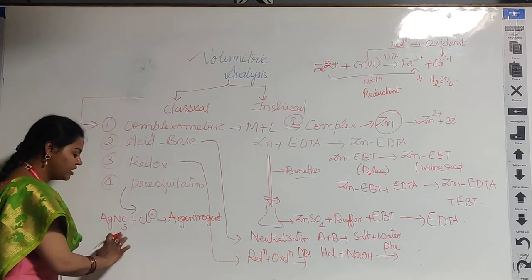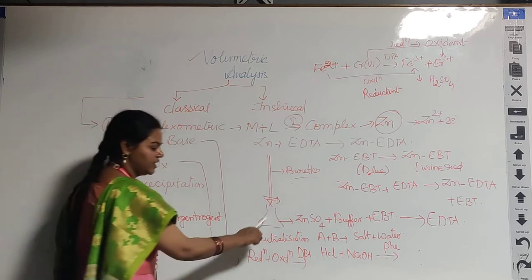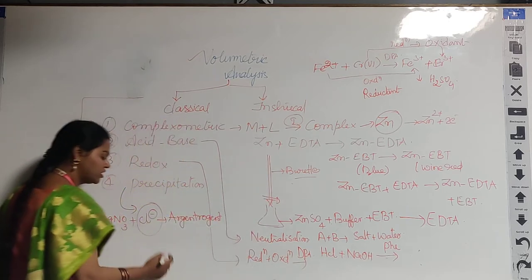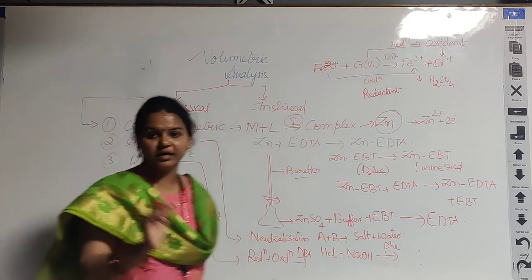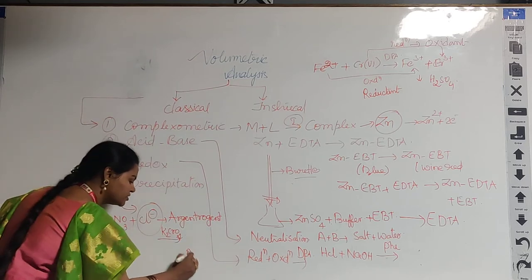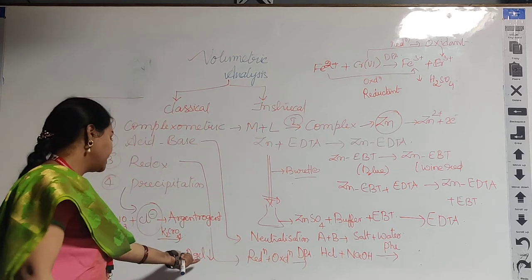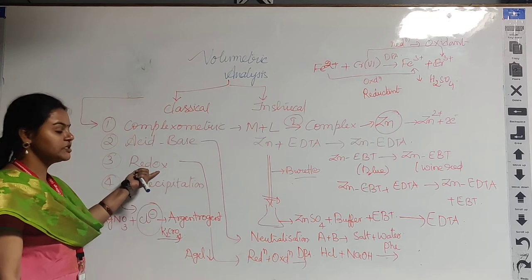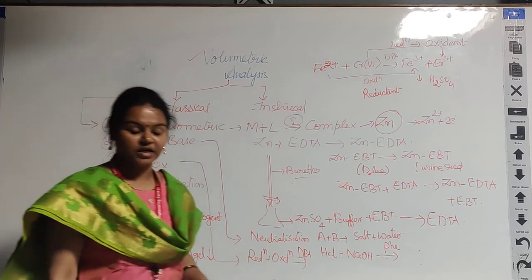In argentometric titration, the chloride-containing solution is taken in the conical flask and silver nitrate is taken in the burette and titrated against it. Potassium chromate (K₂CrO₄) is used as the indicator. Chloride ions react with silver to form silver chloride, which is a white turbid precipitate. This is one kind of precipitation titration. So, precipitation, redox, acid-base, and complexometric — all four types of classical titrations have been covered.